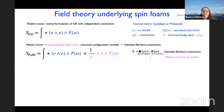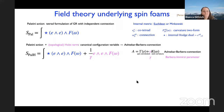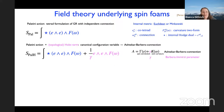The Barbero-Immirzi parameter is introduced so that the canonical momenta you get agree with the Ashtekar-Barbero connection. If you don't add it, you more directly get the extrinsic curvature, which is not a connection. You want a gauge formulation, so you add a connection to the extrinsic curvature, integrate it to a holonomy, and in the end get something similar to lattice gauge theory. Adding this term does not change the classical equation of motion.